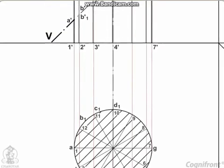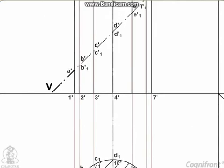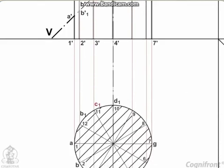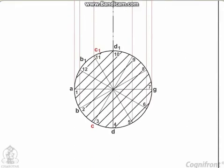The width of the section at any point, say C', will be equal to the length of the chord CC1 in the top view.